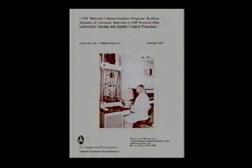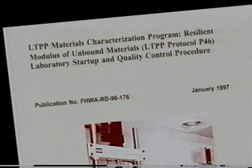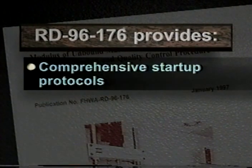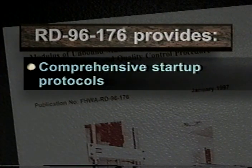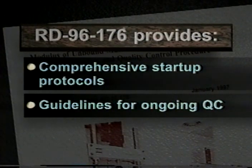One thing you need is the Federal Highway Administration's publication number RD 96176, called Resilient Modulus of Unbound Materials Laboratory Startup and Quality Control Procedure. RD 96176 was developed as part of the Long Term Pavement Performance Program. It tells you how to verify that your system is working right, and it says that after you're up and running, you should use the startup protocols as the basis for an ongoing quality control program. That's important because you don't want to spend even one day gathering bad data due to out-of-spec or malfunctioning equipment.